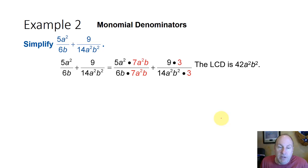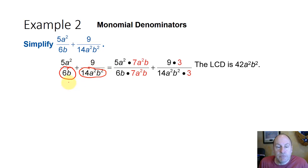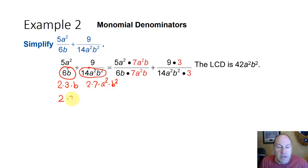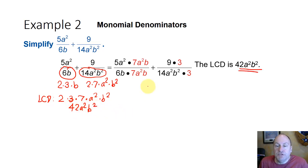Let's look at an example with monomials. If we have 5a squared over 6b plus 9 over 14a squared b squared, we need to find the least common denominator. 6 factors into 2 times 3 times b, and 14a squared b squared factors into 2 times 7 times a squared times b squared. So the least common denominator will use: 3 appears once, 7 appears once, a squared is the largest power of a, and b squared is the largest power of b.